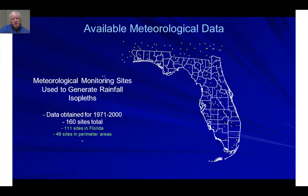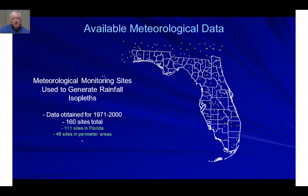The first step in evaluating the rainfall data in Florida was to develop all of the available meteorological data. Looking back at historical data, there are about 111 sites within the State of Florida that have collected rainfall data historically. We also looked at some sites immediately outside of the State of Florida, because our intention was to develop isopleths and we needed boundary data to complete them. We generated all of the data for each of these 160 sites in total, over the period from 1971 to 2000.